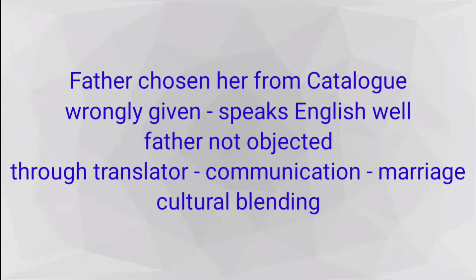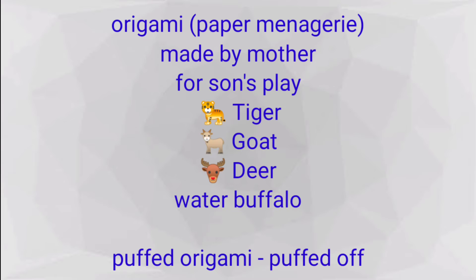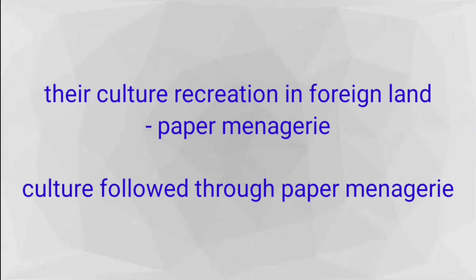The cultural blending began. In the beginning of the short story, Jack demanded one laohu origami — a tiger paper craft. After that, he demanded origami of a goat, deer, and a water buffalo from his mother. With those wrapping papers, the mother made all those paper craft animals. He played with the puffed origami until it came apart. So native culture is reframed, restructured, and recreated through these origami animals.